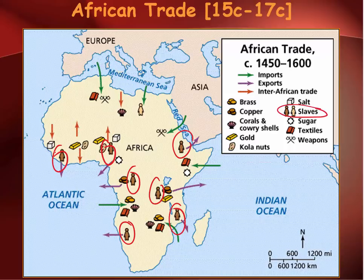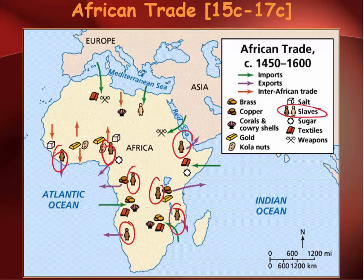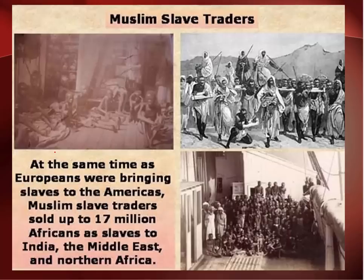In 1807, the British outlawed the slave trade in their country, and then began to attempt to forcefully end it by seizing other countries' slave ships. But the trade continued because slave ships from different countries would cooperate with each other to avoid British capture. The overall effect of the slave trade is disputed — some scholars say it was completely dire for the economy of West Africa, while some historians suggest the trade was actually relatively small compared to the whole population of the continent and had very little economic effect. There was also a slave trade going on in the East, referred to as the Arab slave trade.